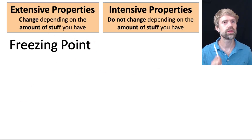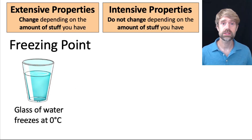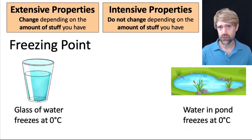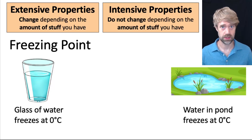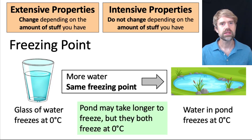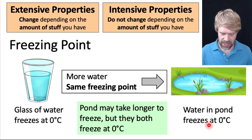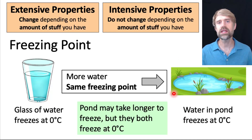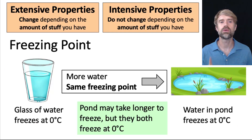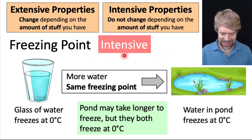How about freezing point? This is one that really trips people up and the TEAS loves it. Let's think this through. A glass of water freezes at zero degrees Celsius — that's its freezing point. A lot of water in a pond also freezes at zero degrees Celsius. The pond may take longer to freeze — it may take weeks — but both the glass of water and the pond freeze at zero degrees. So freezing point doesn't change depending on the amount of water. It is an intensive property.